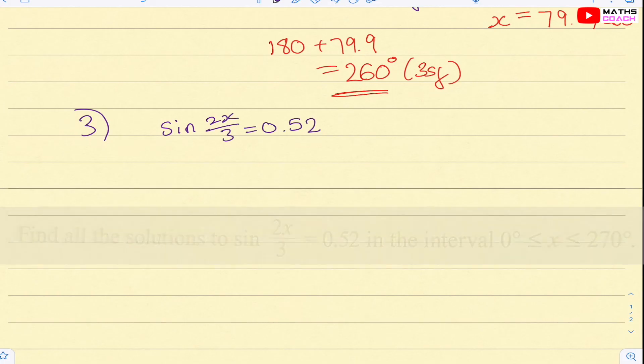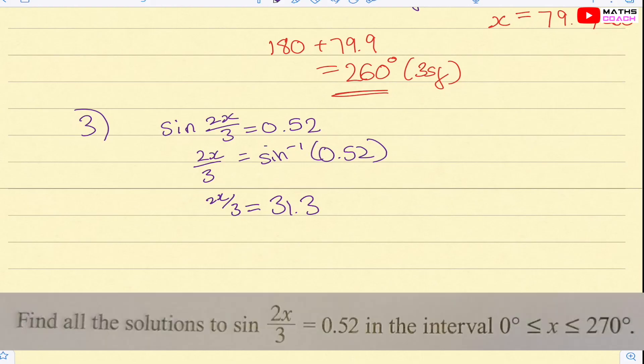Question three. Find all the solutions to sine 2/3 x equals to 0.52 in the interval between 0 to 270. So the first thing we're going to do is we know that 2x over 3 is equal to the inverse sine of 0.52, which gives us 31.3. And if you're not sure how many decimal places to round to, you tend to go by what the question is giving you. So I would just stick to one decimal place and keep consistency.